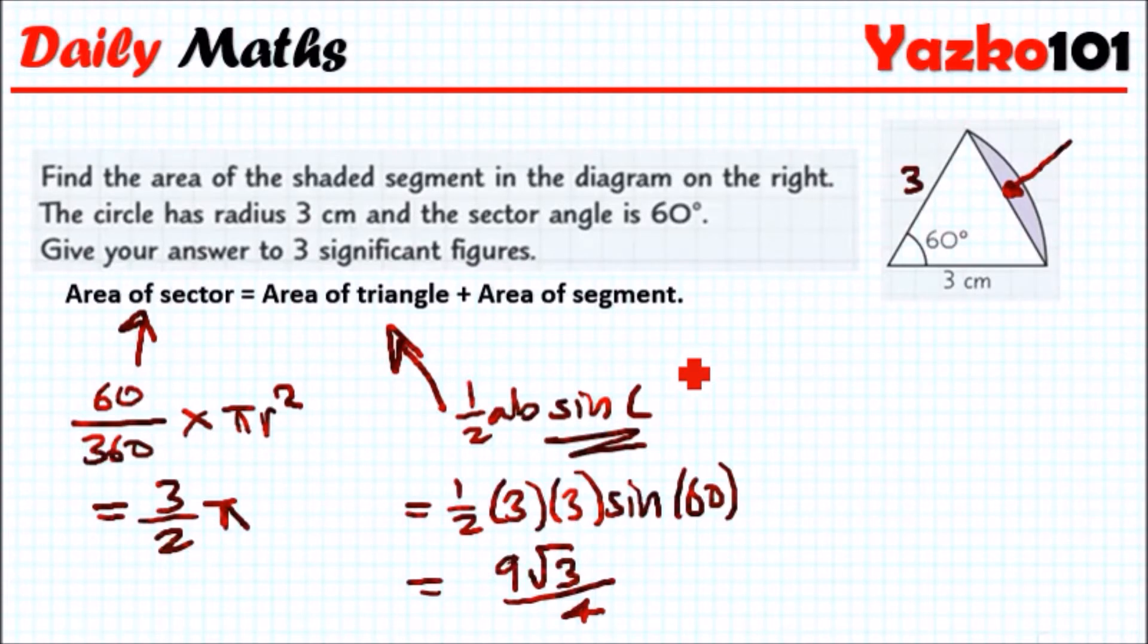As I said earlier, it's just a combination of these two. All you're going to do is rearrange by subtracting the area of the triangle from the area of the sector. So the answer is 3/2 π minus 9√3/4.